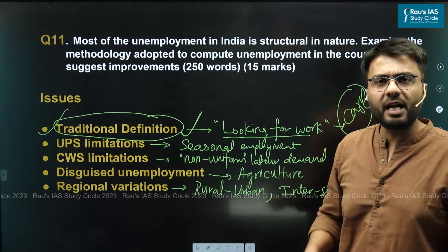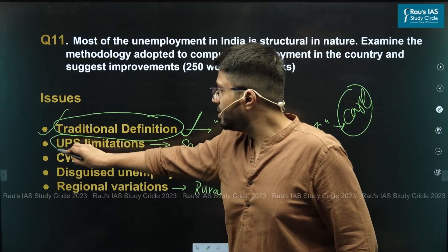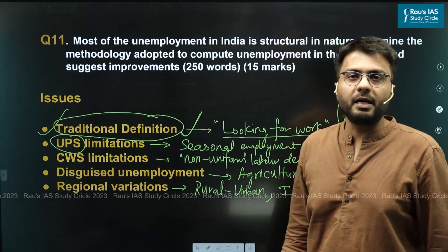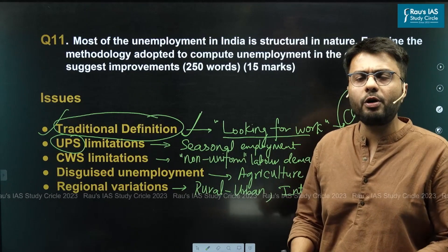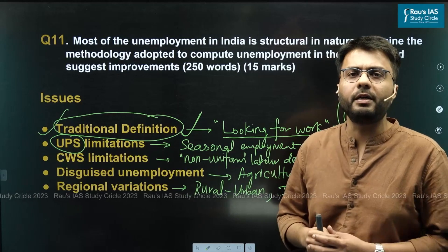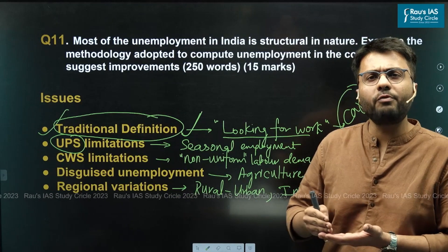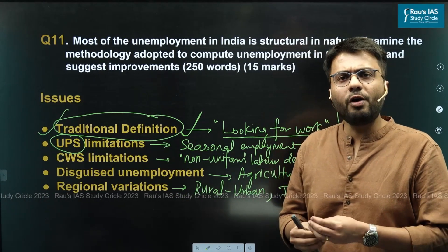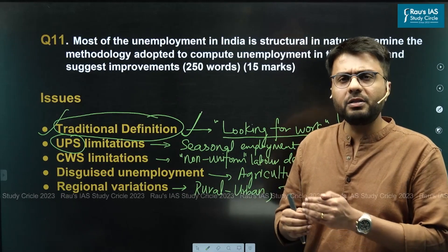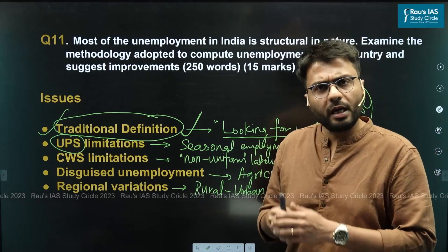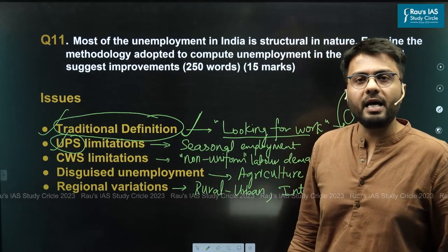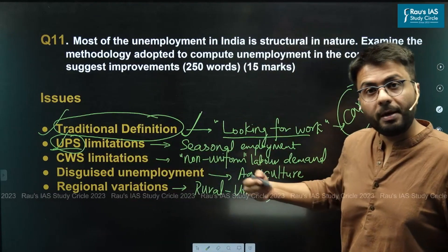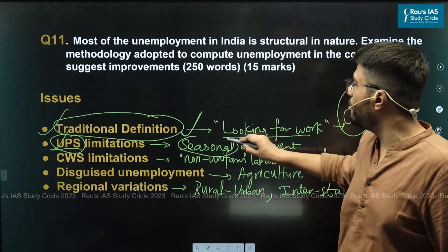The second challenge relates to limitations of the Usual Principal Status. UPS fails to account for the cyclical nature of Indian employment. For example, a person involved in agricultural work is not employed throughout the year and finds work only for a few months. If a person is unemployed for 4 months in a year, UPS still categorizes them as employed. Hence this method cannot account for the seasonal nature of employment in the country.